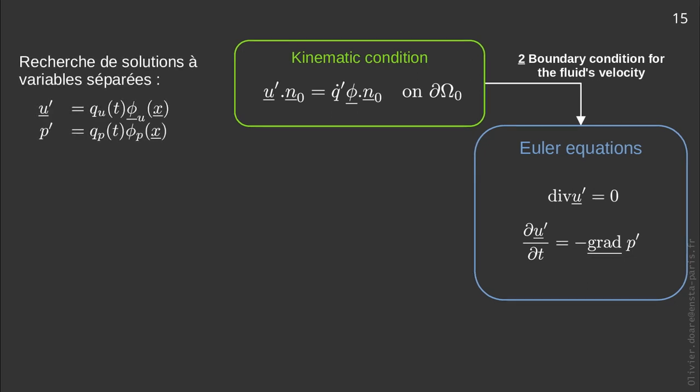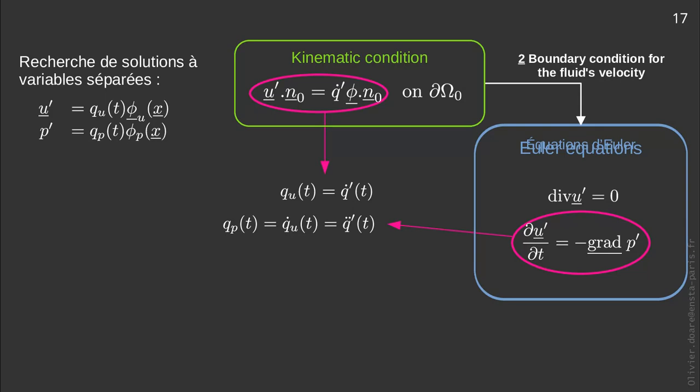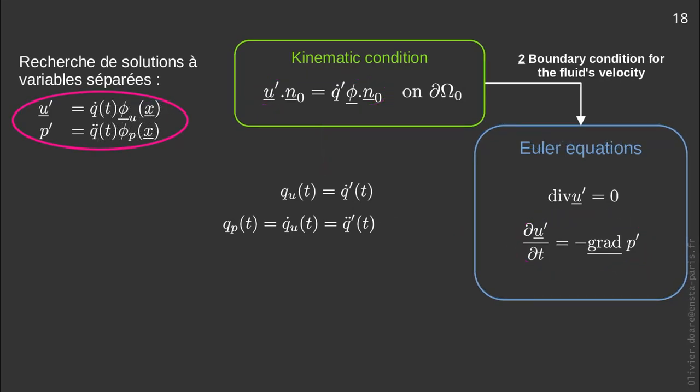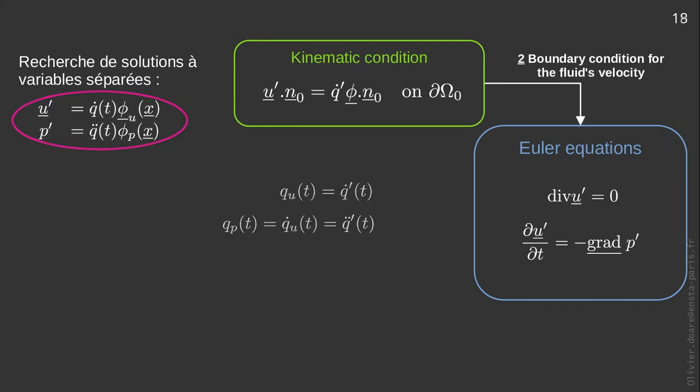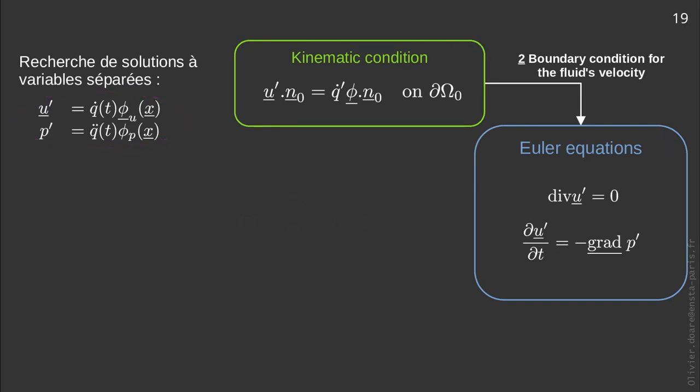We will look for solutions with separate variables, q times phi denoted u and p for velocity and pressure respectively. If we look carefully at the kinematic condition, which must be satisfied whatever x and t, we see that it imposes that q_u is equal to the time derivative of q'. Then, we see that the linearized Euler equations impose that q_p is equal to the derivative with respect to time of q_u, that is the second derivative of q'. The problem is thus readily solved in time.